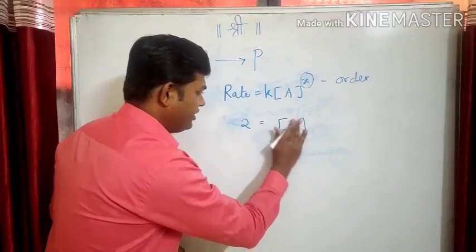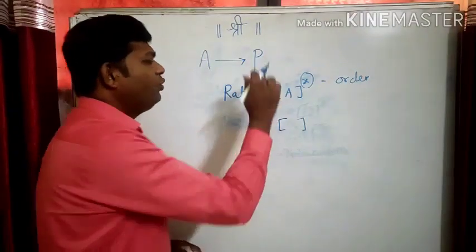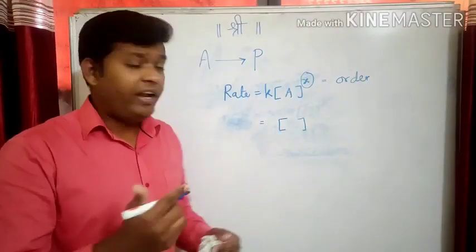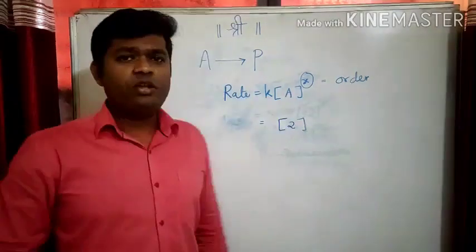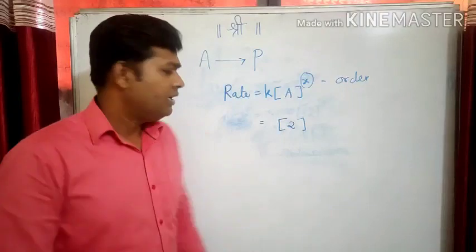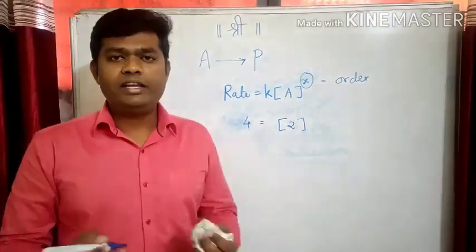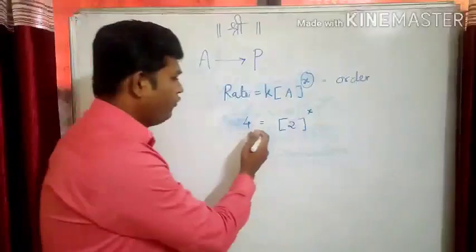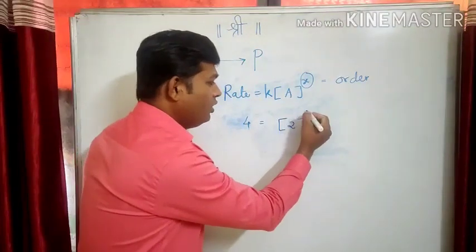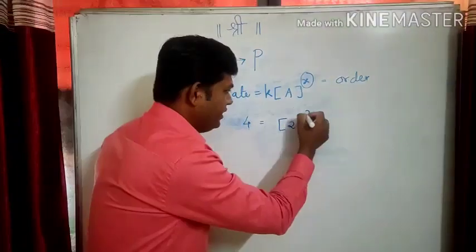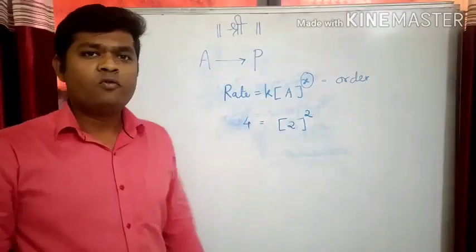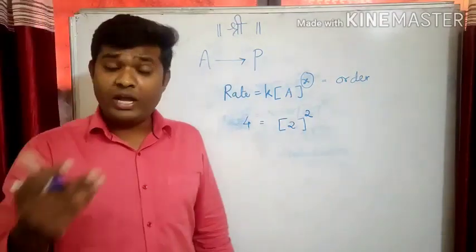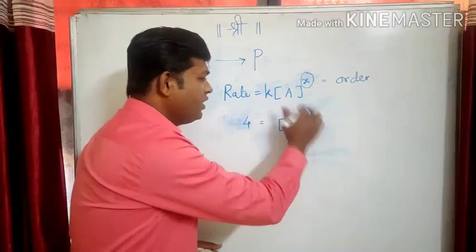Let us consider another experiment. Assume that I am increasing the concentration of reactant A 2 times and the rate increases 4 times. What will be the value of power x? 4 equals 2 raised to x, so 2 raised to 2 is equal to 4, and the power becomes 2. If I increase the concentration of reactant 2 times and rate increases 4 times, the power becomes 2.